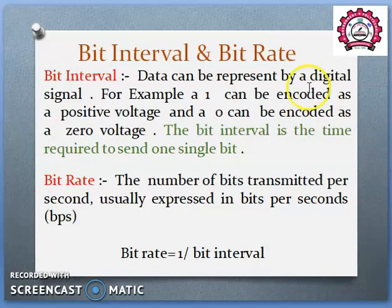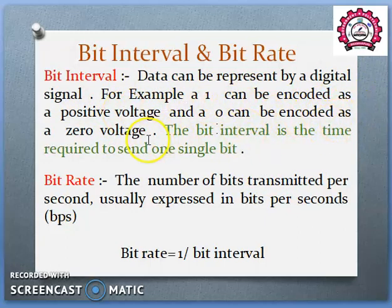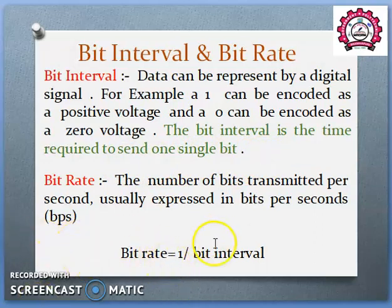Then, next are bit interval and bit rate. Here bit means 0 or 1 — data is in digital form. Data can be represented by a digital signal; for example, 1 can be encoded as a positive voltage and 0 can be encoded as a 0 voltage. In a digital wave there are discrete values — only 0 or 1; we don't have continuous values in a digital signal. Bit interval is the time required to send one bit from one place to another.